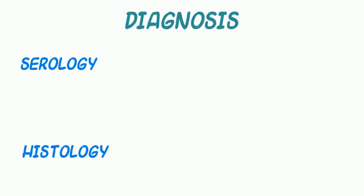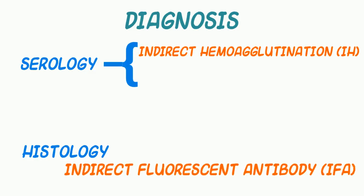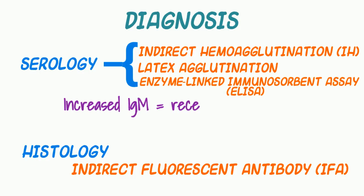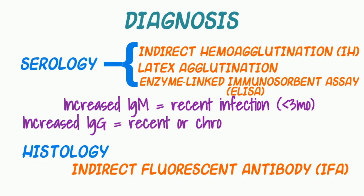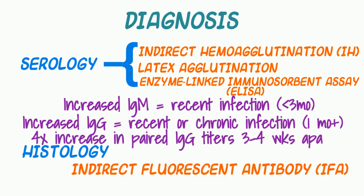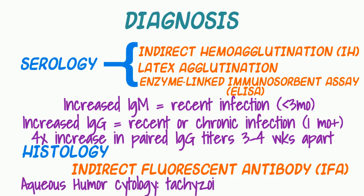The clinical signs of toxo are not particularly specific to the disease, so a definitive diagnosis generally requires serologic or histologic methods. Immunological techniques in a living animal include indirect hemagglutination assay, indirect fluorescent antibody assay, latex agglutination test, or ELISA. Increased IgM titers are consistent with recent infection, generally less than three months. IgG appears after about a month of infection and may show positive titers for years during a subclinical infection. If an animal presents with clinical disease, paired IgG titers three to four weeks apart are recommended, with a four-fold or more increase in titer confirming infection. Another pre-mortem technique is to look for tachyzoites or IgG in the cerebrospinal fluid or aqueous humor.